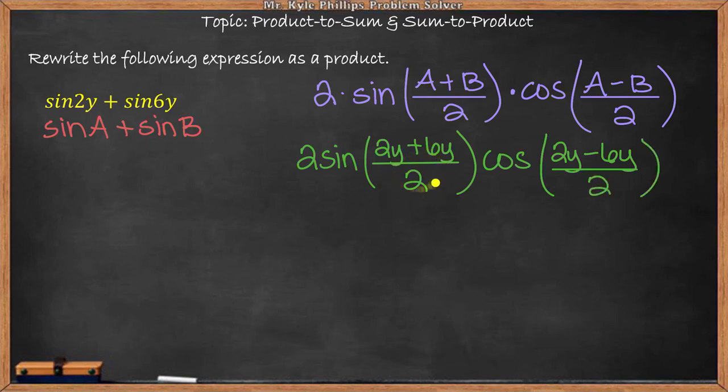Now I'm going to simplify what's in my parentheses. 2y plus 6y is 8y, and 8y divided by 2 is 4y. So we have 2 sine of 4y times cosine of... 2 minus 6 is negative 4, and negative 4 divided by 2 is negative 2, so this will be negative 2y.